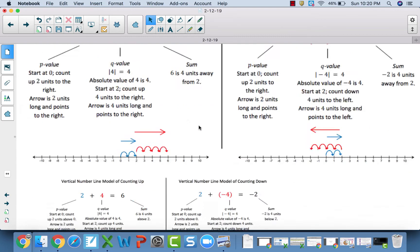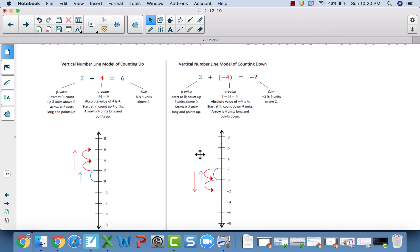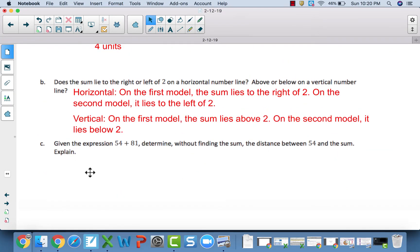So if we scroll down here, right? On our first model, it is above 2 because we went in the positive direction. We got larger by 4, but on our second model, it lays below 2 because we went in our negative direction. We added a negative. We got smaller. Now, C, given the expression 54 plus 81, determine without finding the sum between 54, the distance between 54 and the sum.